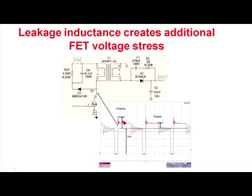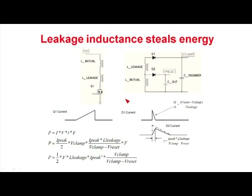And then with the leakage inductance, you get some additional ring. And that sets the voltage rating requirements on the MOSFET and eventually sets the dissipation in the MOSFET, because the voltage rating is going to set the on-resistance of the MOSFET.